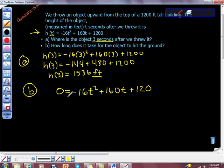So when you factor out -16, it will be 0 = t² - 10t - 75.